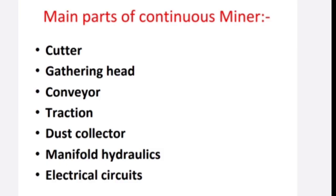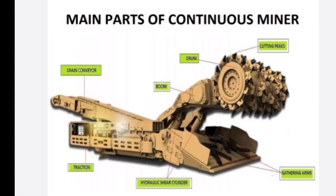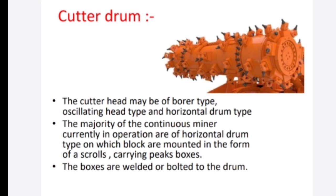The main parts of the continuous miner are: cutter head, gathering head, conveyor, traction, dust collector, main frame, hydraulics, and electrical circuits. Looking at the machine, we can identify the chain conveyor on the left, the boom, the drum, the cutting head, the gathering arms, and the traction unit.